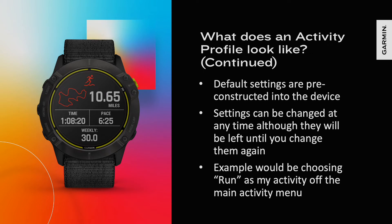While the default settings will be constructed into each different activity profile, you have the ability to customize these data fields however you wish. There are a number of different things to think about: which metrics do you want to view, what is the order in which you want to view those metrics, and what additions do you want to include, such as the ability to listen to music or set an alert based on time? You can name the activity whatever you like as well. You can see here on the left a picture of an actual activity profile with total distance up top, total time and pace in the middle, and the individual's weekly total at the bottom.